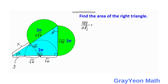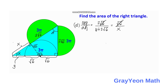Considering the ratio of opposite over adjacent for angle alpha in the bigger right triangle, the opposite side is 2√6 and the adjacent is Y plus 2√6. For the smaller similar right triangle, this ratio equals √6 over X. Canceling √6 and cross-multiplying gives us the first equation: 2X = Y + 2√6.